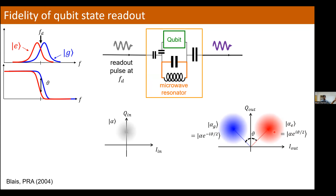If these distributions are well enough separated compared to their noise — compared to the standard deviation of these Gaussians — then you can draw a threshold right in the middle and associate outcomes on the left of the threshold with the ground state and outcomes on the right with the excited state. This becomes a so-called quantum non-demolition measurement of the sigma-z operator of our qubit.